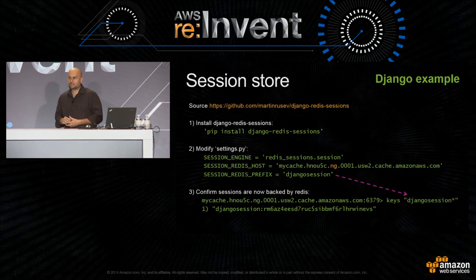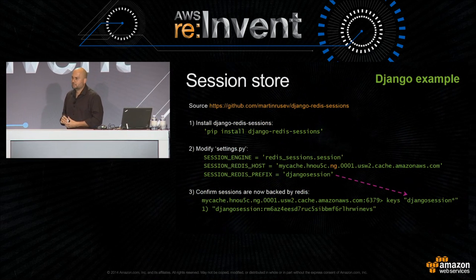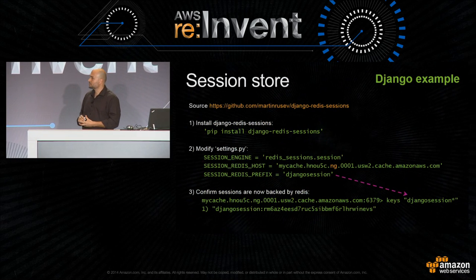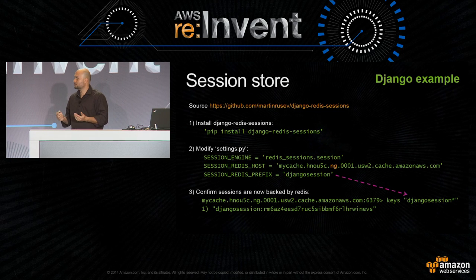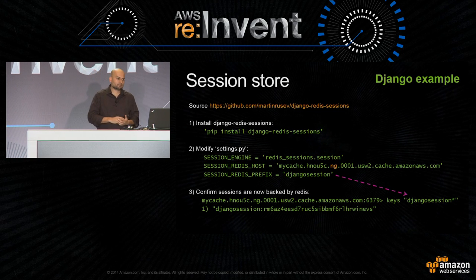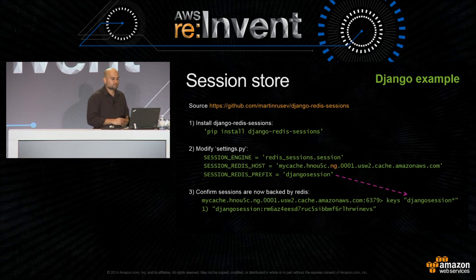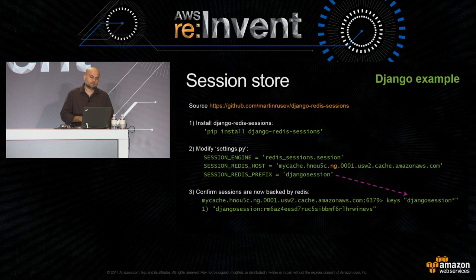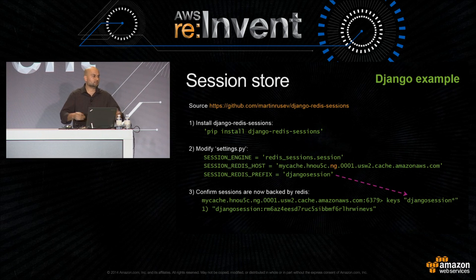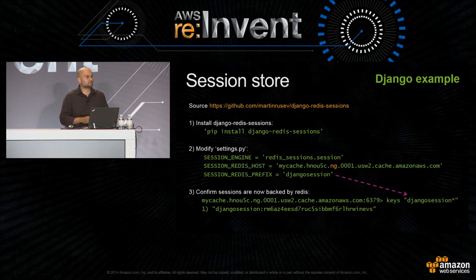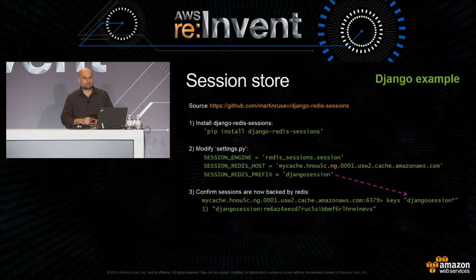Doing the same thing using a Python example and Redis — this is a very popular Django-Redis example. You can specify a prefix to all your sessions, and now any time you hit this server running the Django framework, all your session data is going to be externalized.